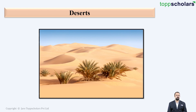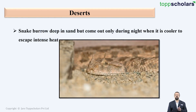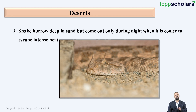Let us have the first example. Snakes are very common in the deserts, but during the day it is very hot. So what do snakes do? They burrow deep into the sand and come out only during the night to hunt because it is cooler.